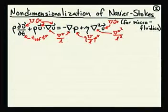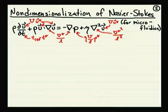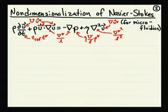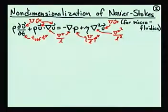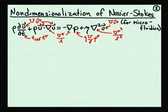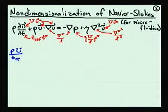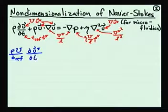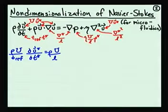Once we have these non-dimensional parameters defined, we can look at the Navier-Stokes equations and replace all of the dimensional terms — u, t, rho, p, etc. — with some reference value like capital U, L, or the reference time, plus a non-dimensional term, as indicated by the notation in red. This then leads us to a new form of the equation where all derivative terms are in terms of non-dimensional parameters, but with a whole bunch of pre-multiplying terms.